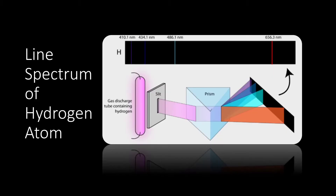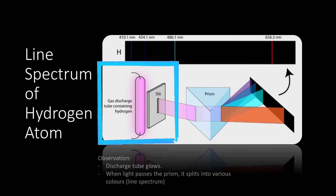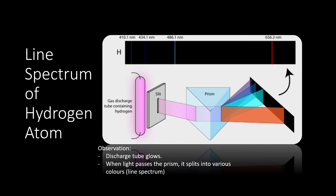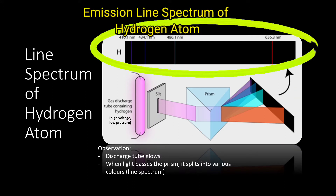How to form emission line spectrum from hydrogen atom? When hydrogen gas is put into a discharge tube, there are a few observations that we can make. We can see the discharge tube glows, and when the light from the discharge tube is passed through the prism, it will split into various colors to give the emission line spectrum.